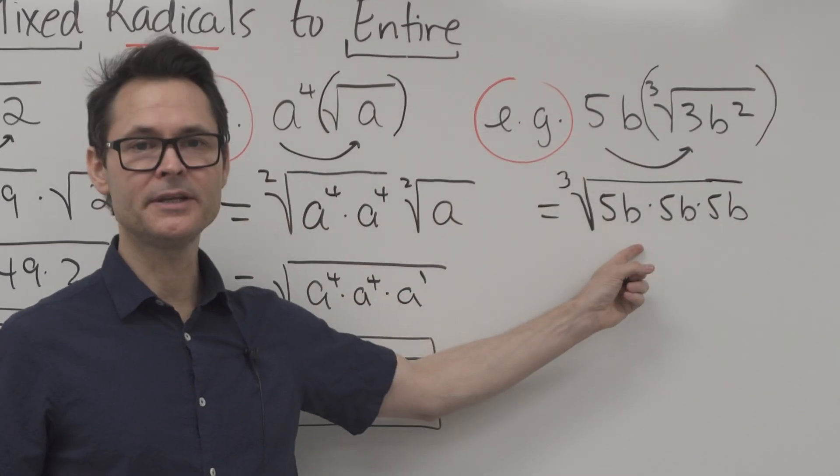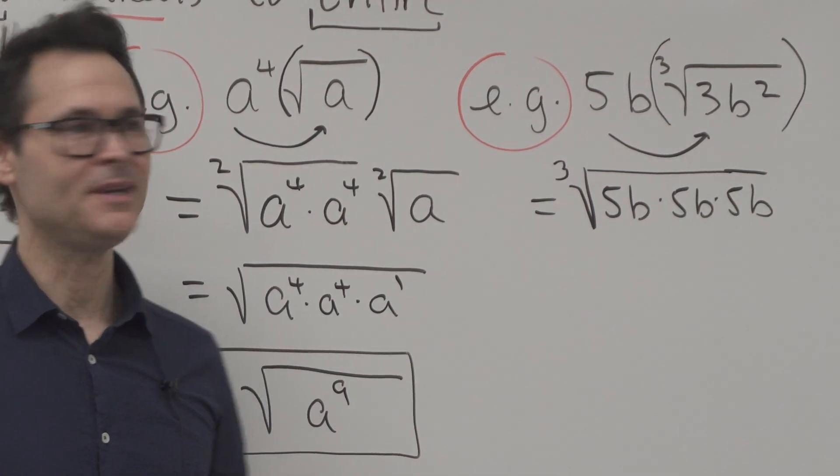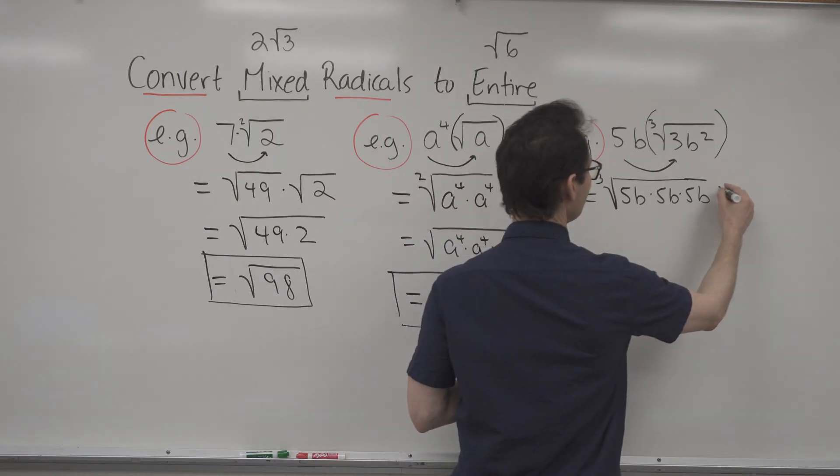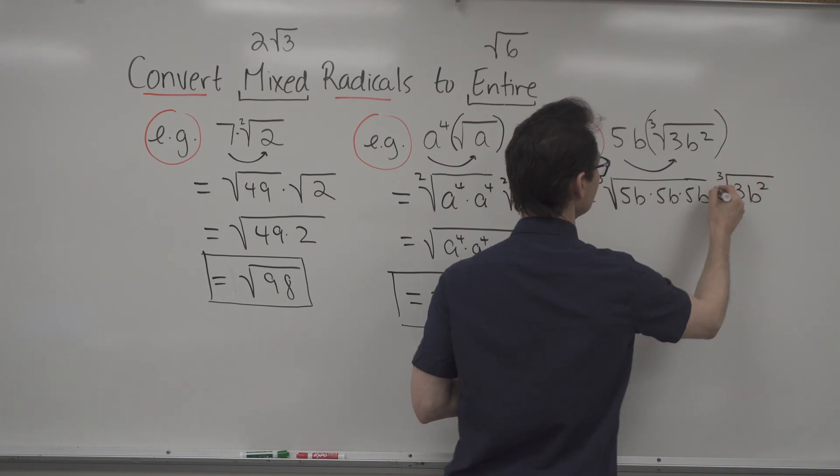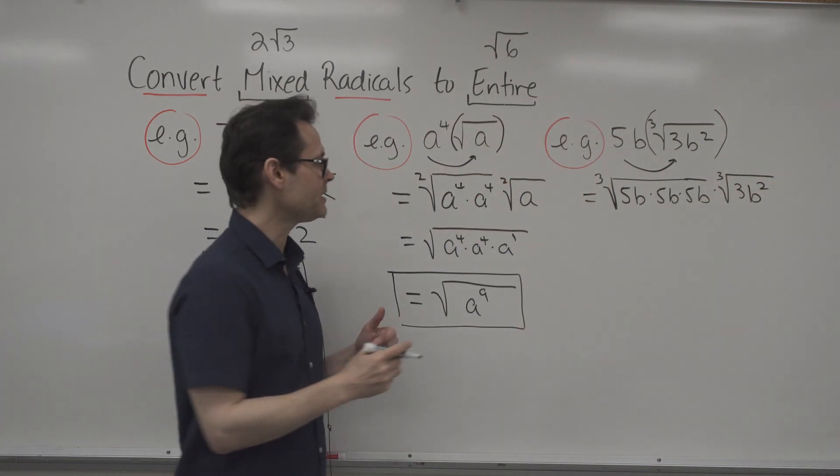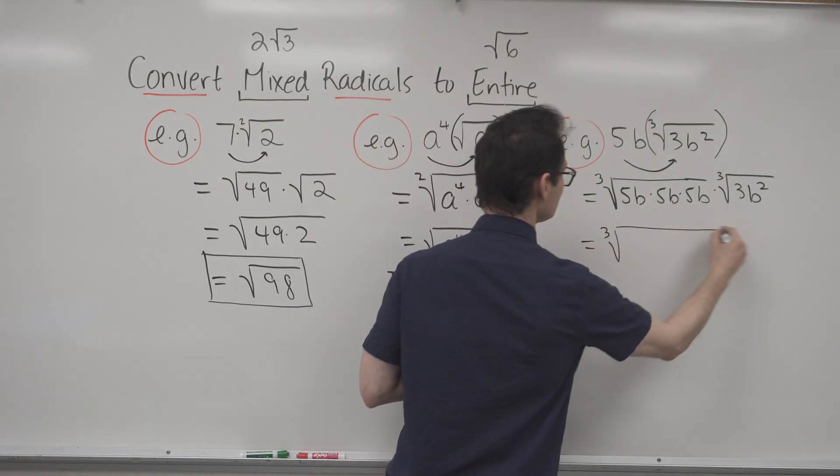And you can see that's equivalent to 5B. The cube root of 5B times 5B times 5B is 5B. And then I also have the cube root of 3B squared. And these are all glued together by times. Now I can write one big cube root.